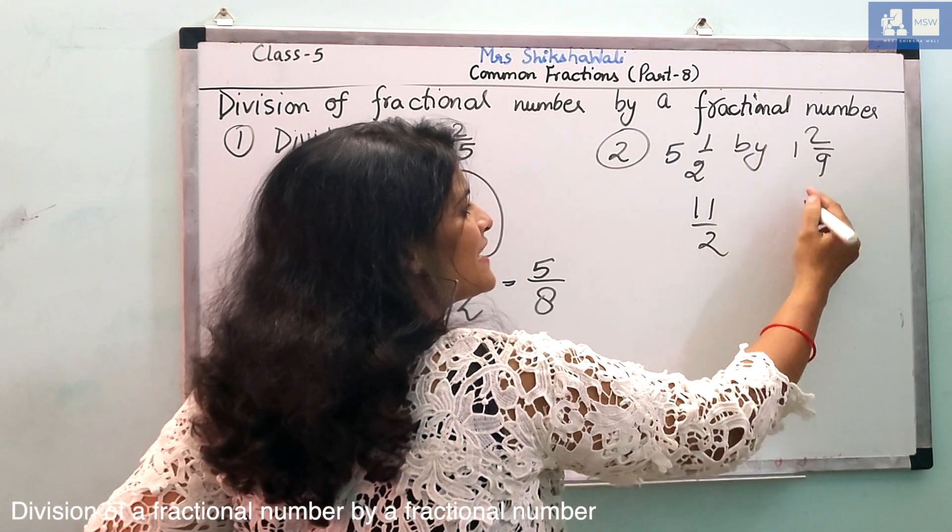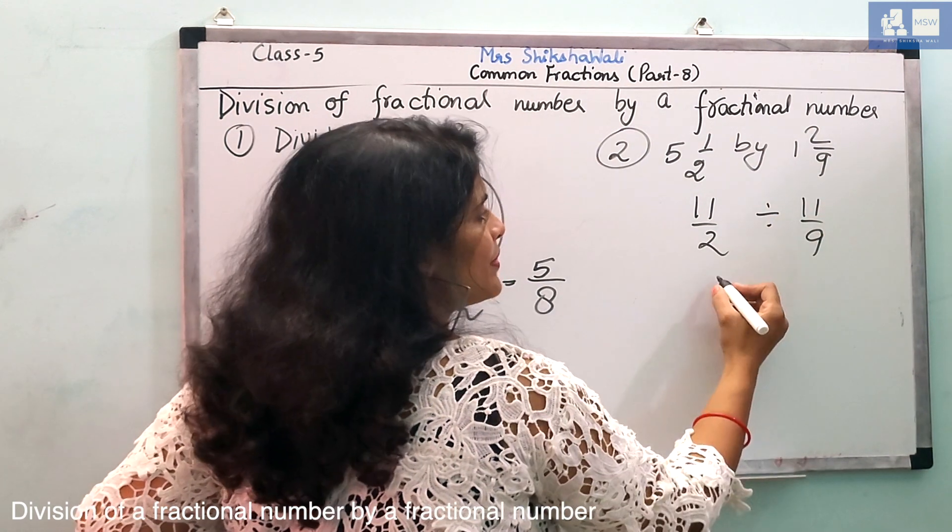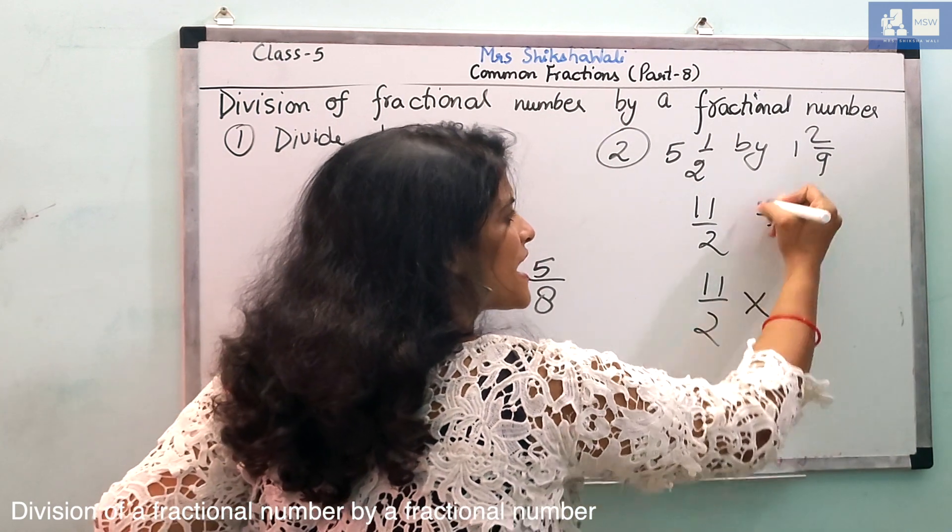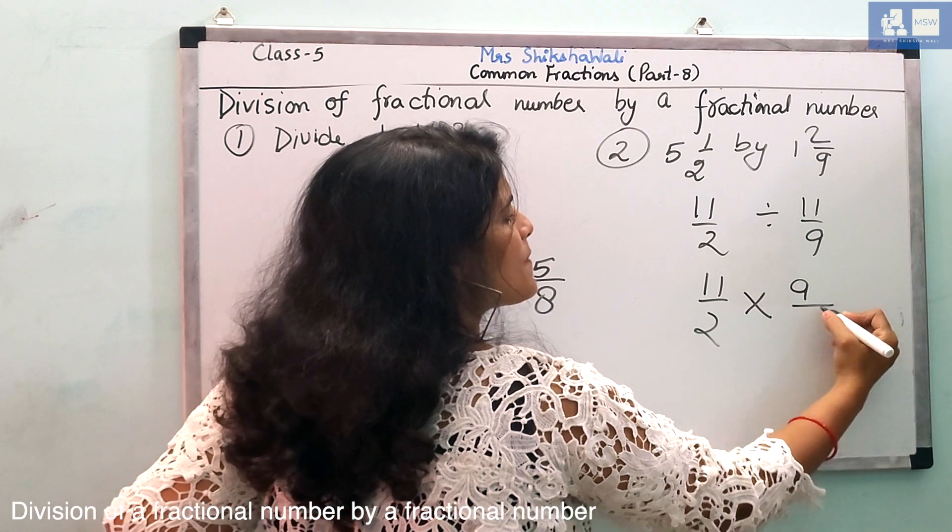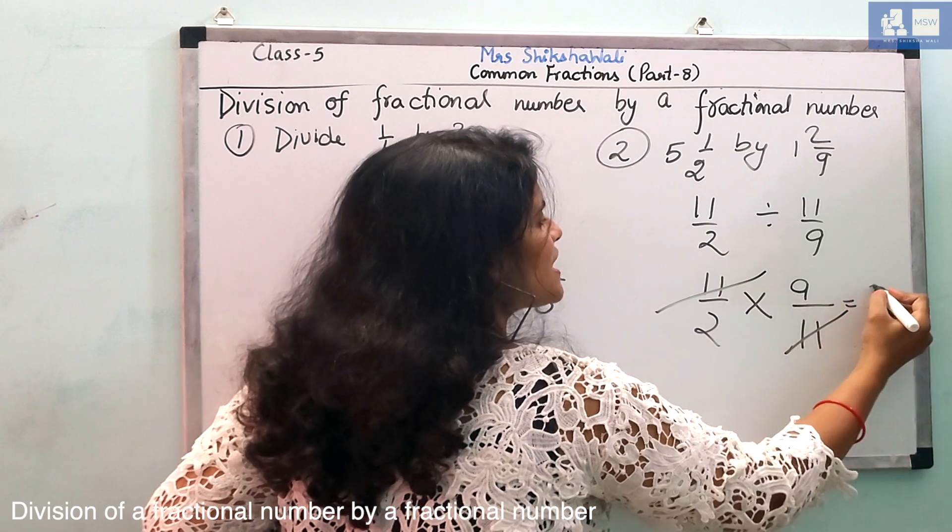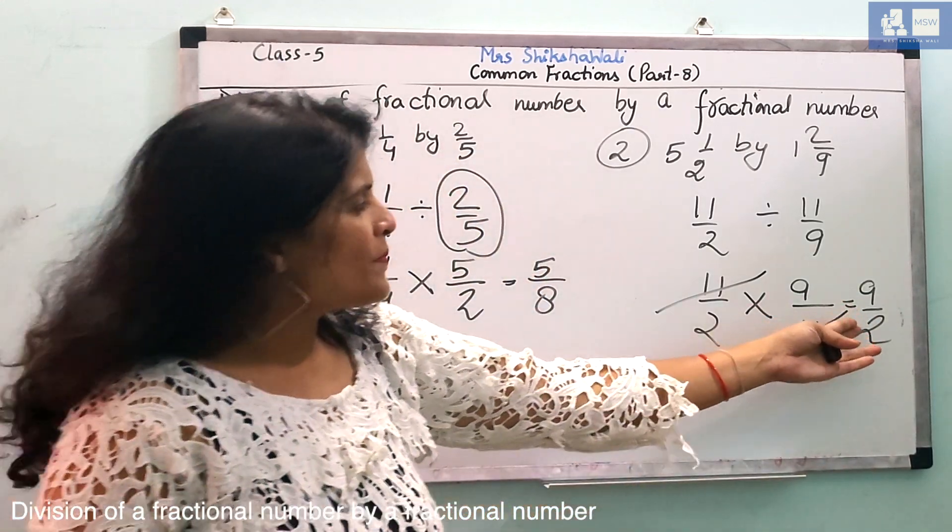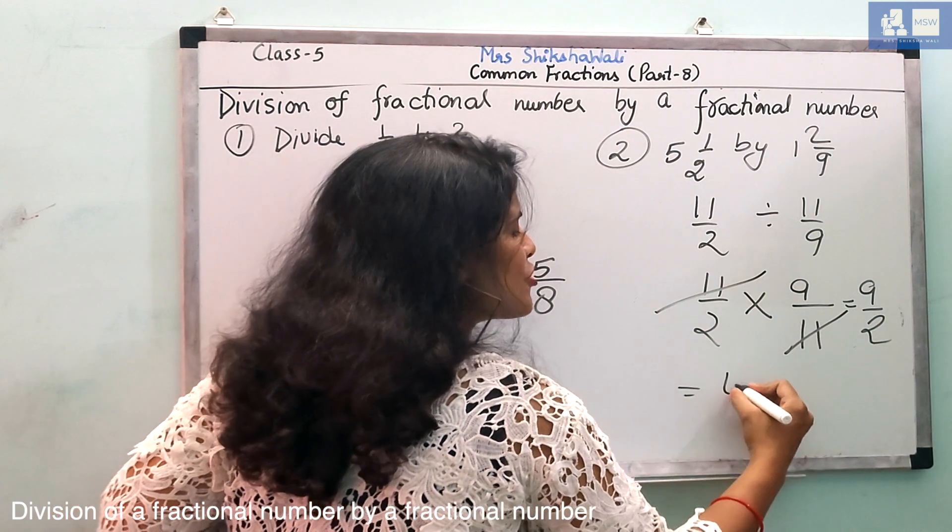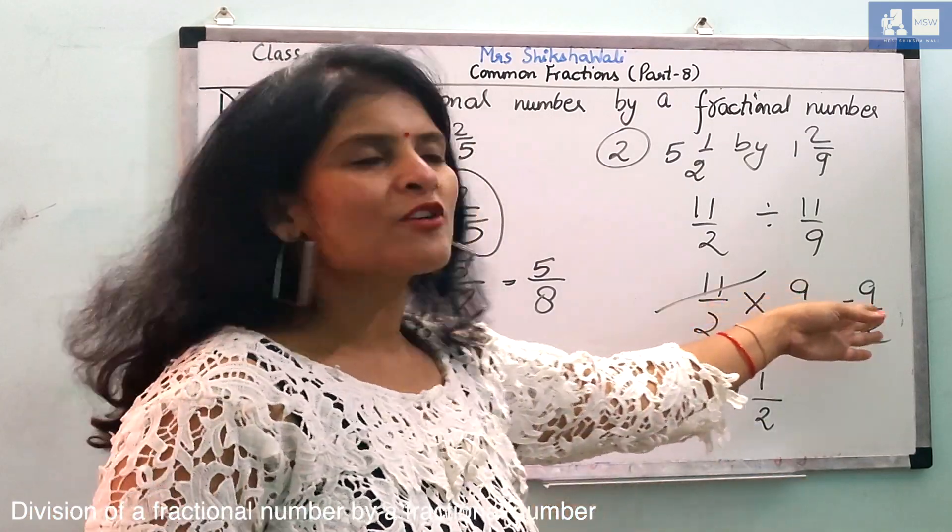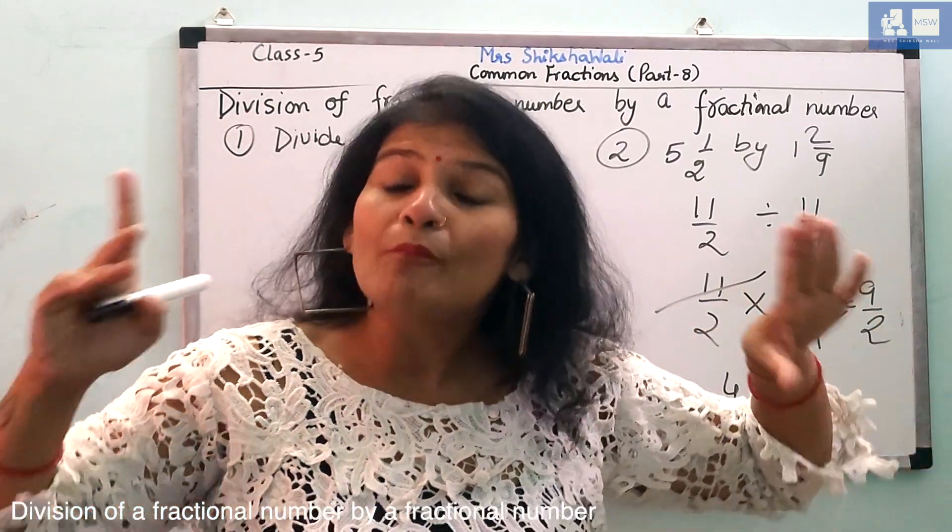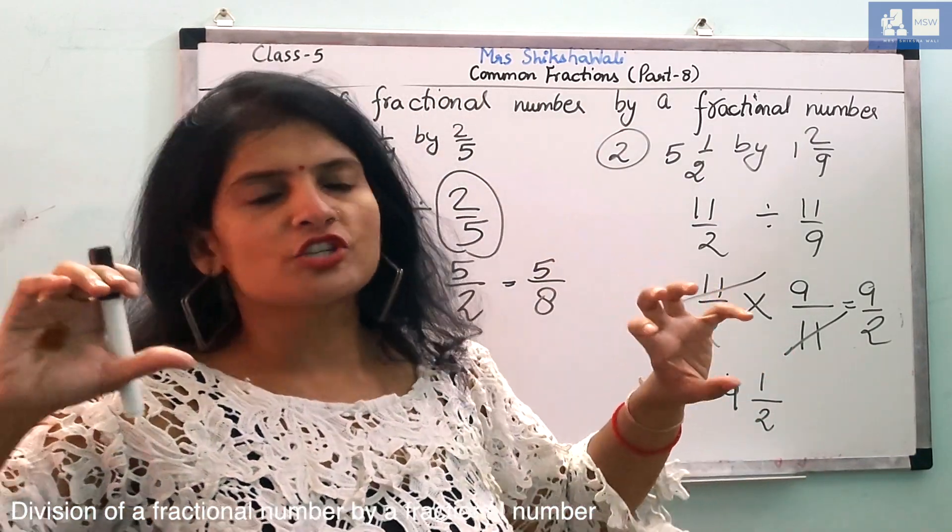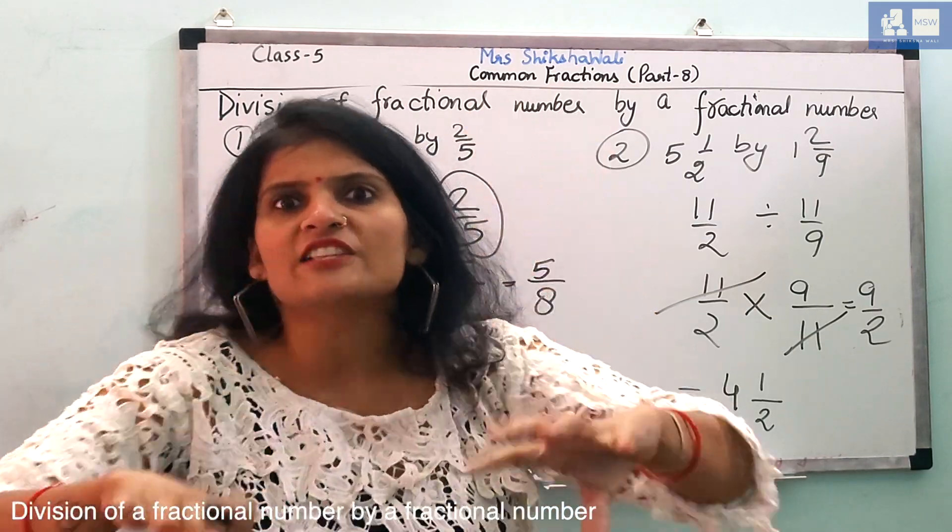9 minus 9 10 is 11 by 9. Now, 11 by 2, this division sign will multiply and this will be reciprocal. So, if I want to ask you in our part series, the whole fraction common fractions, you will come by heart.